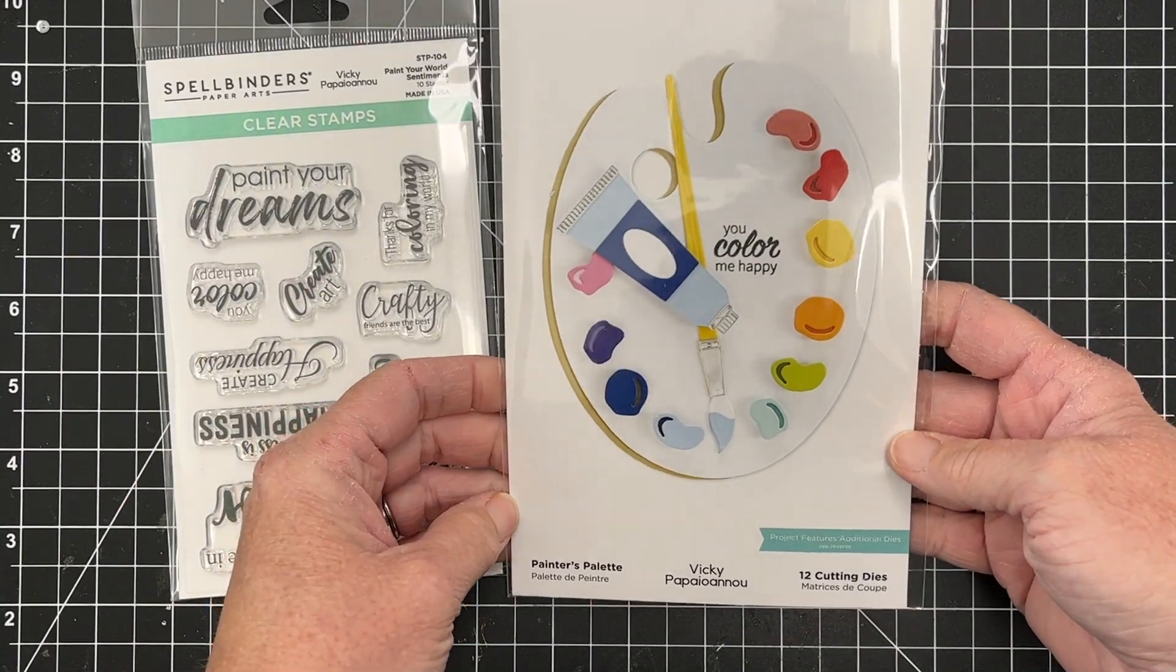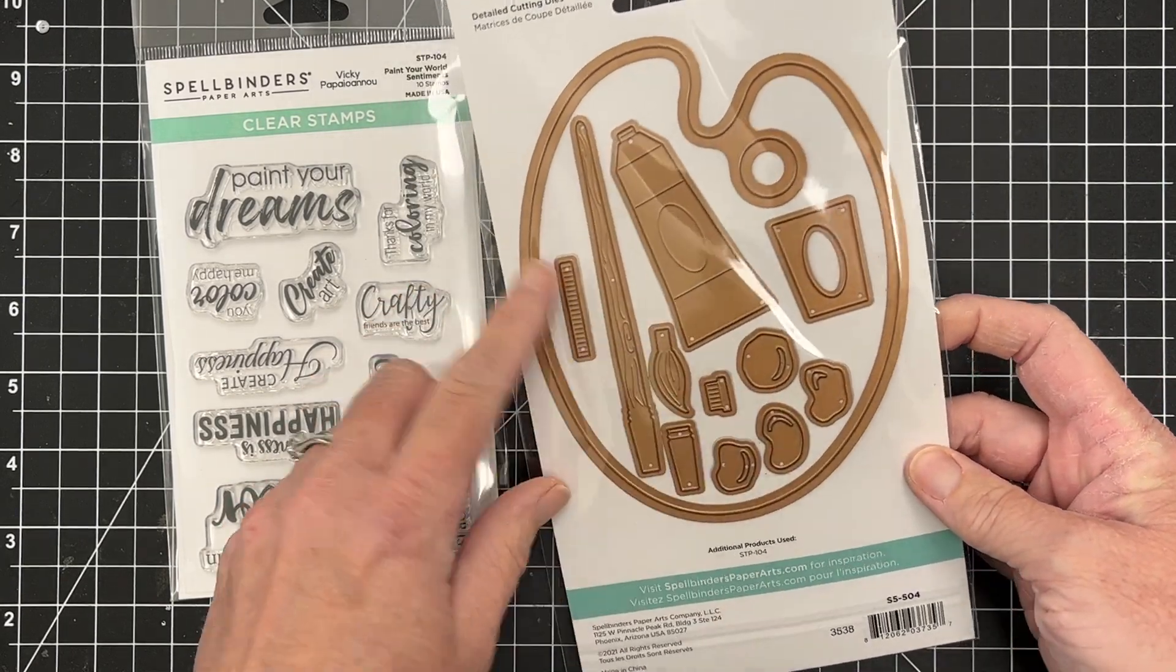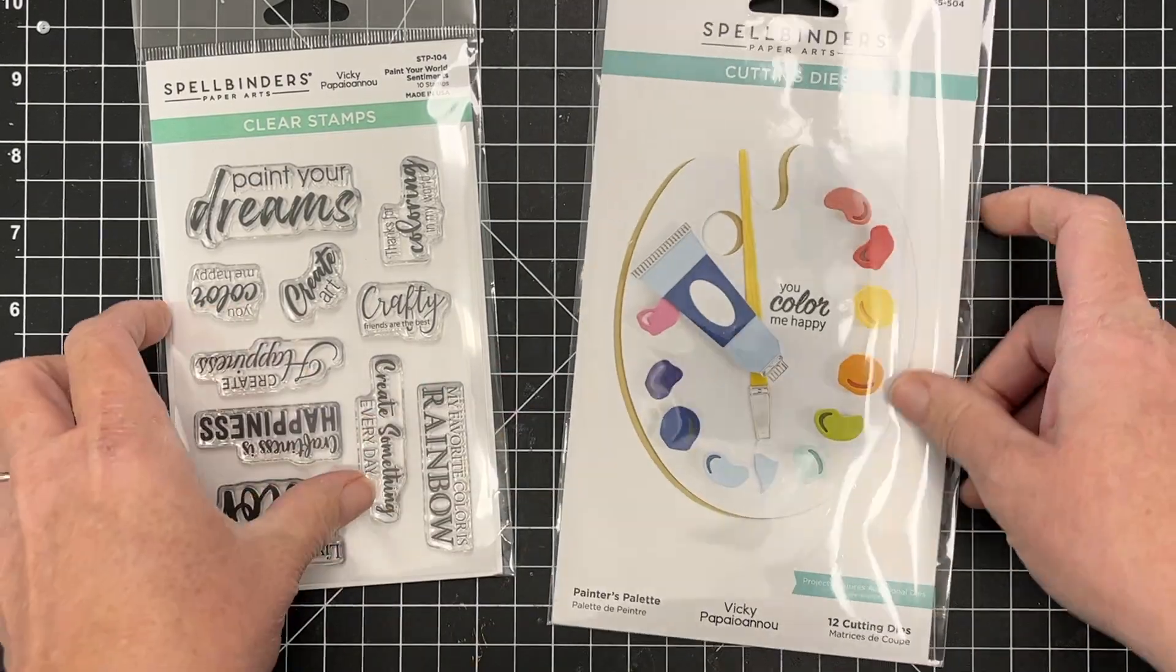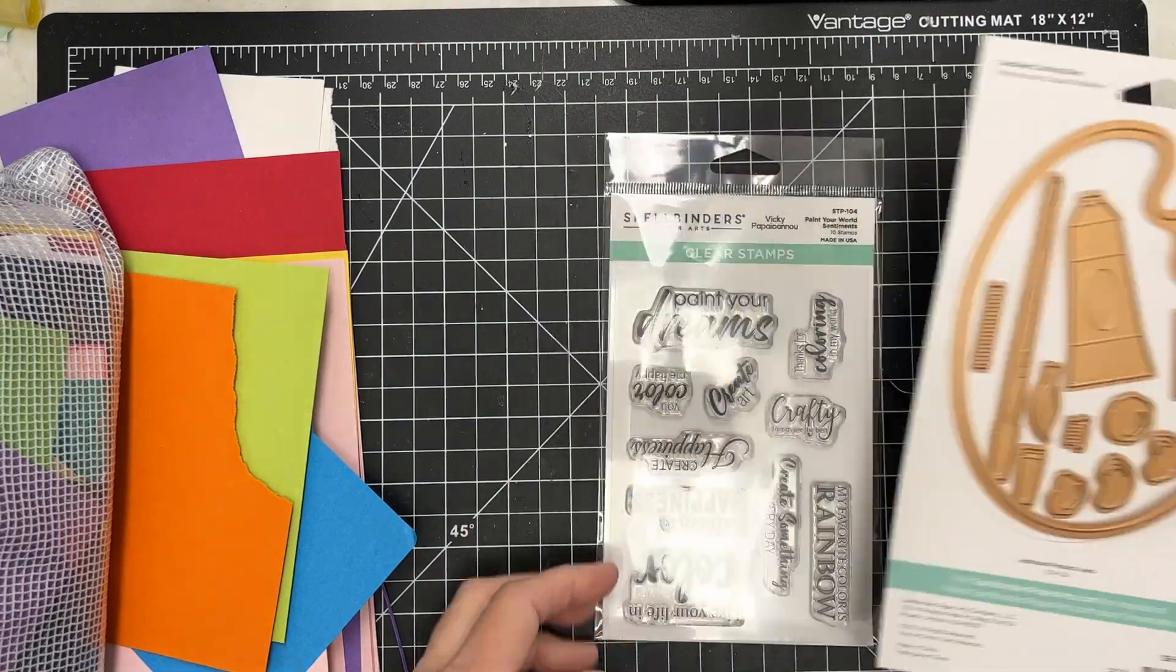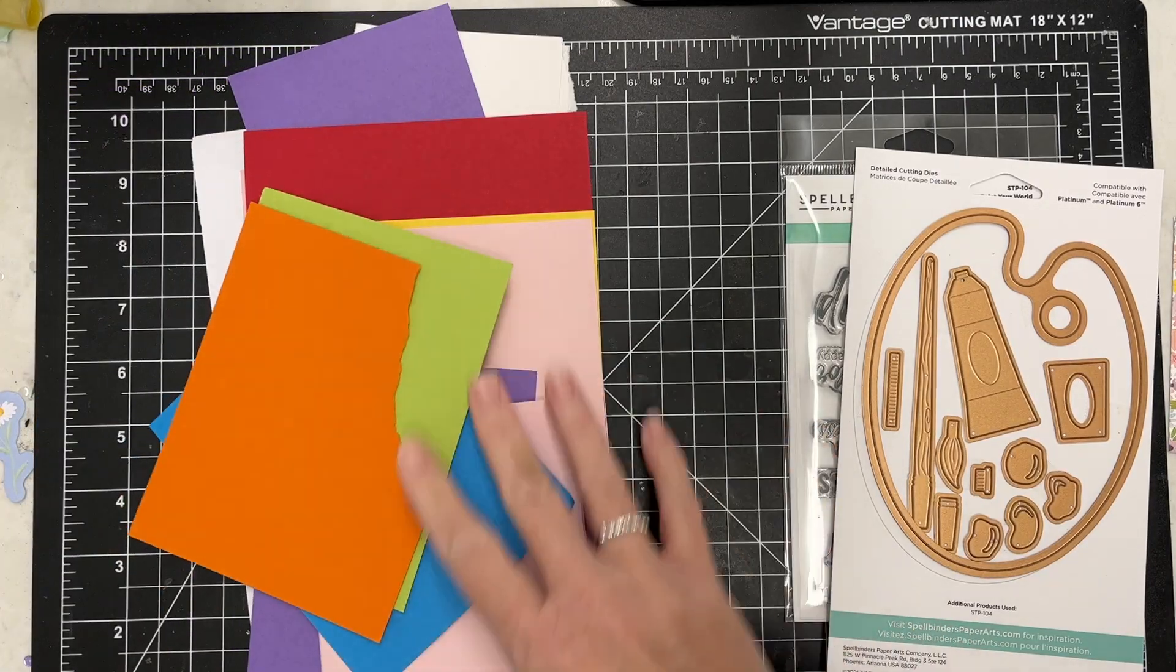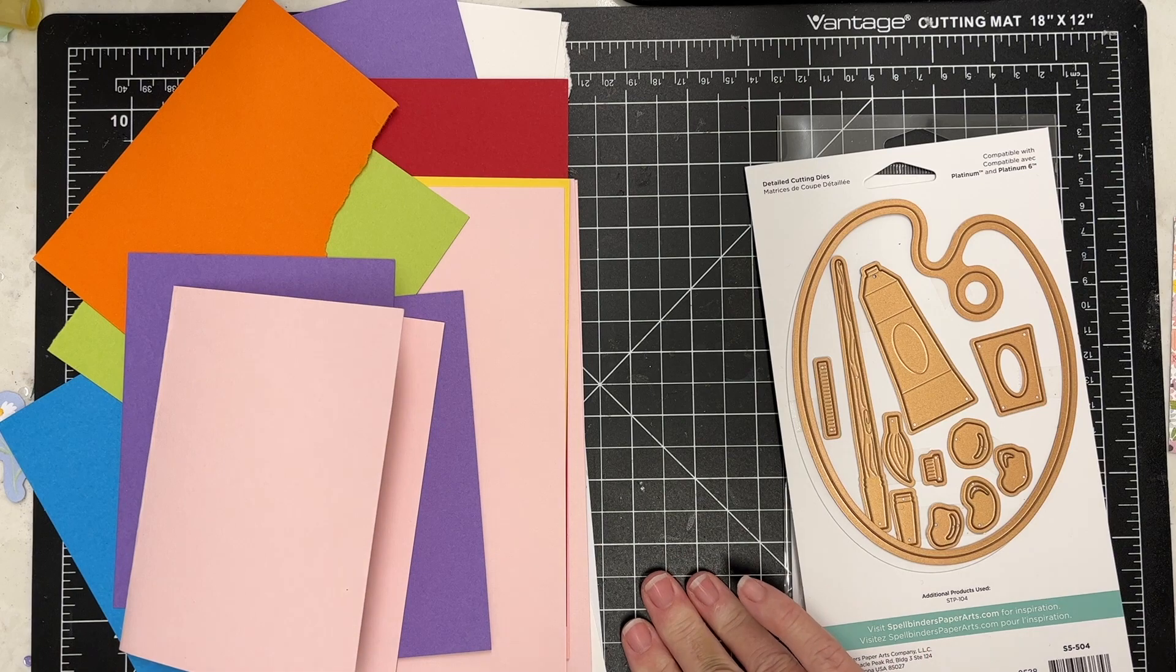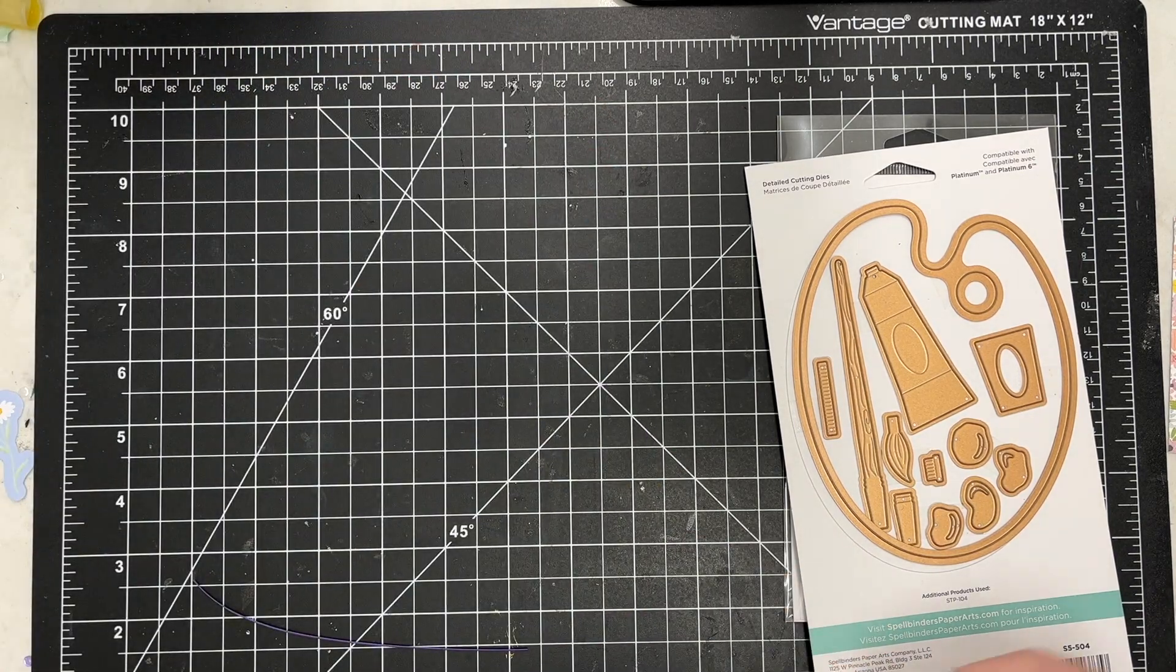So let's go ahead and get started. I have in my craft room a big bag of scrap paper and I have pulled some pieces out. This is a great project to use a lot of your little scrap pieces on because I'm going to be die cutting with this and doing just a little bit of stamping of my sentiment.